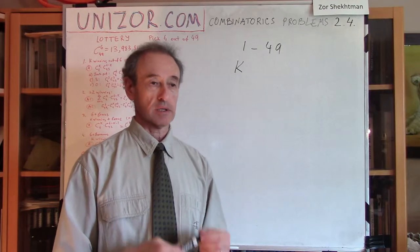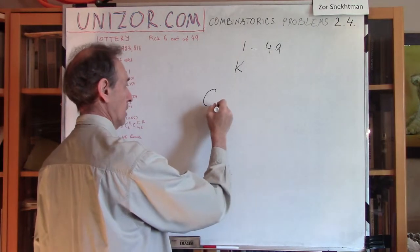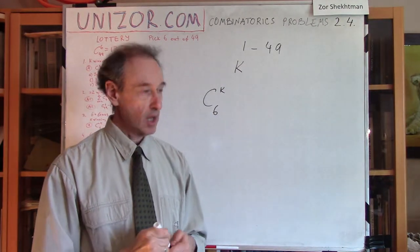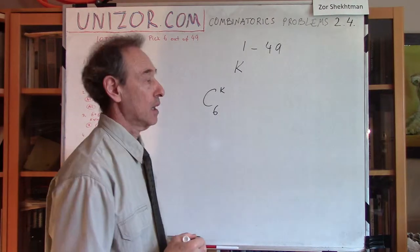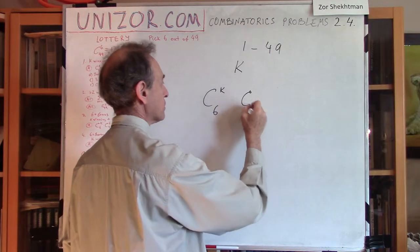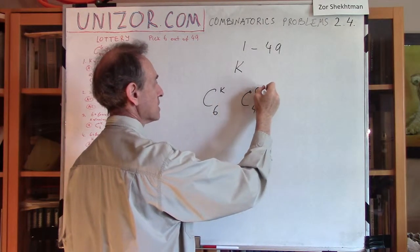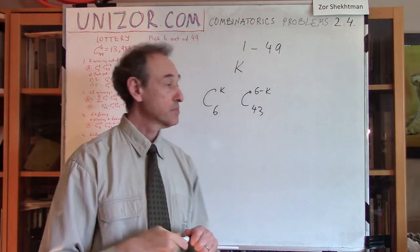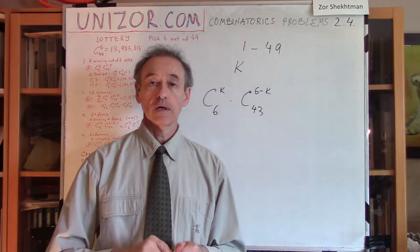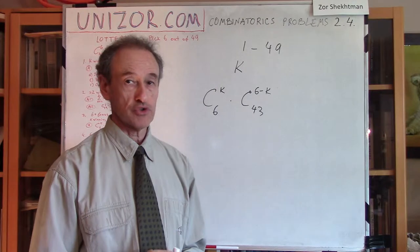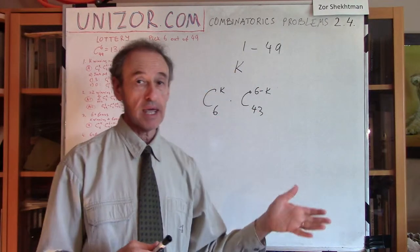To solve this problem we have to find how many different combinations of k winning numbers out of six are possible — that's C(6, k), the number of combinations of k numbers out of six winning. The other six minus k numbers are supposed to be non-winning numbers. There are 43 non-winning numbers: 49 total minus 6 winning equals 43 non-winning. So the rest, six minus k of whatever you have chosen, must be among these. If you multiply them together, you get the number of different combinations of six numbers with exactly k being winning numbers. Obviously, the greater k, the fewer combinations.